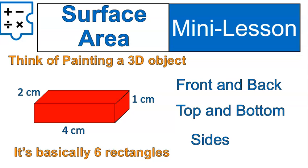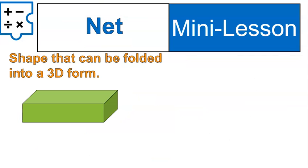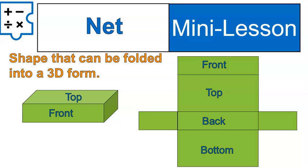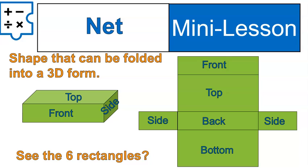Let me show you what this would look like if we were to take our original figure and fold it out from a three-dimensional form into a two-dimensional figure. That is called the net. You can see that if this is the back, that would be the top, and we would have the front here. The bottom is hard to see on the three-dimensional figure, but you can see it there. Those four fold up into being the top, front, bottom, and back, and then the sides are on the left and the right — six different rectangles that make up the surface area.